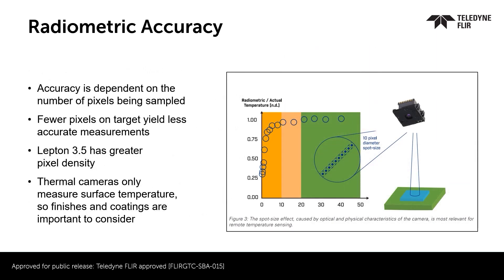Radiometric accuracy is also dependent on the number of pixels that are on the target being measured. 5 pixels is the minimum, and 10 or more pixels on a target is best. The target being measured should also be uniform temperature. The smaller the target, the closer the camera must be to ensure enough pixels on target. With more pixels and greater resolution, Lepton 3.5 is the preferred choice for measuring surface temperature.